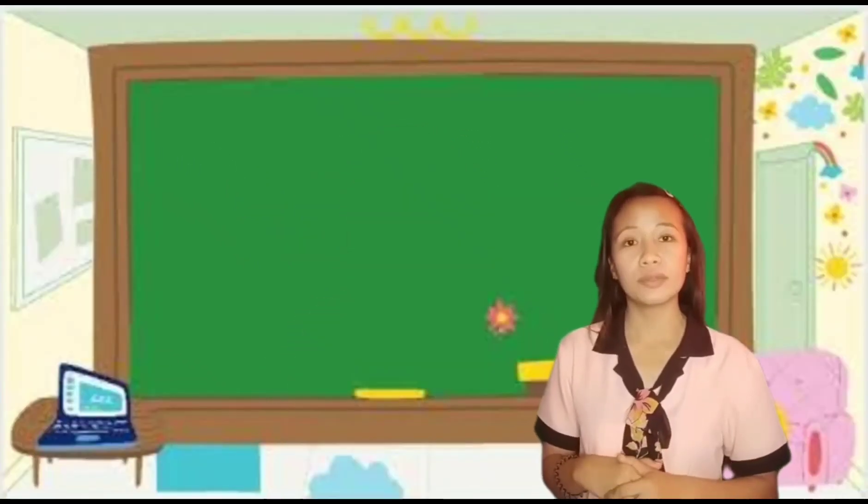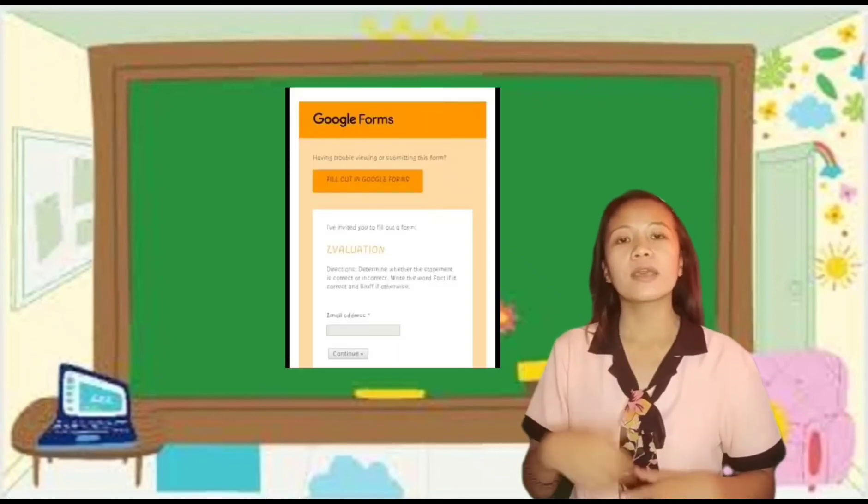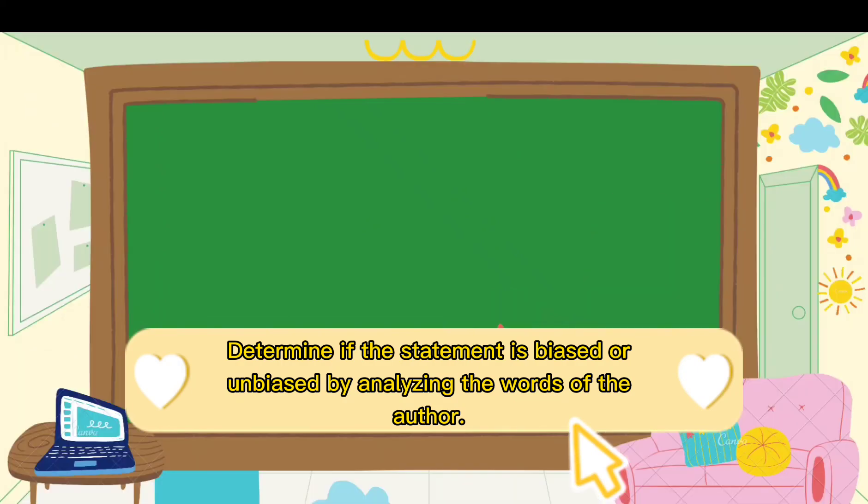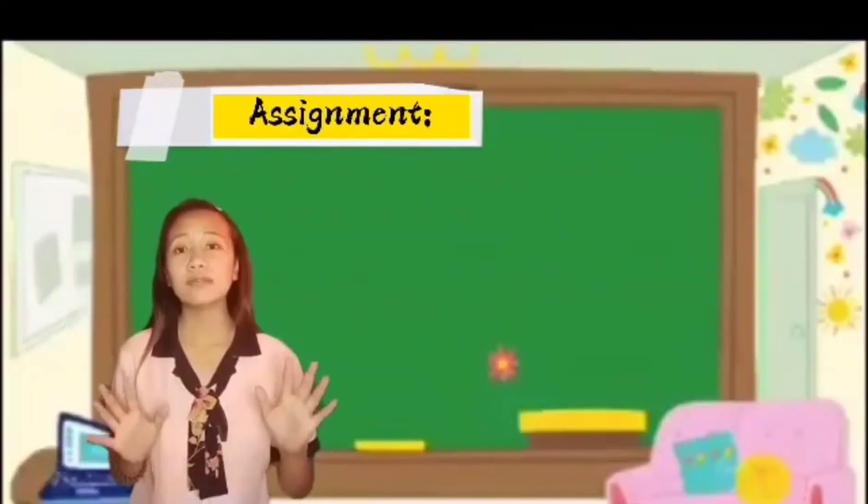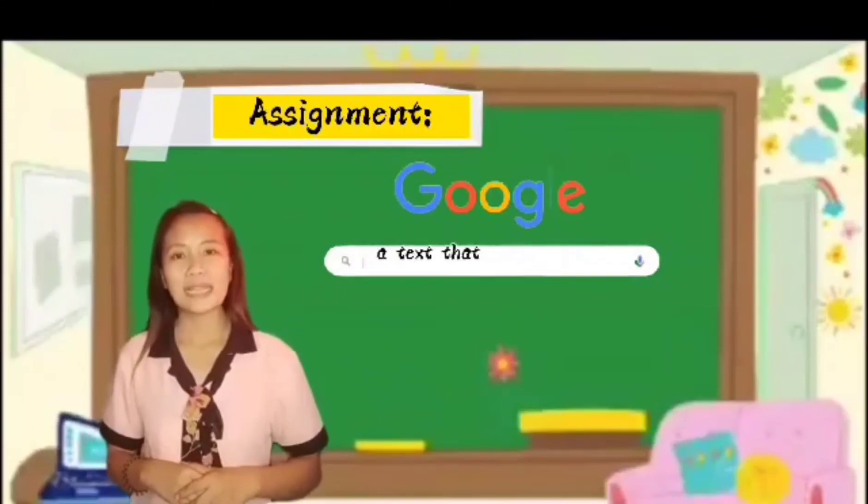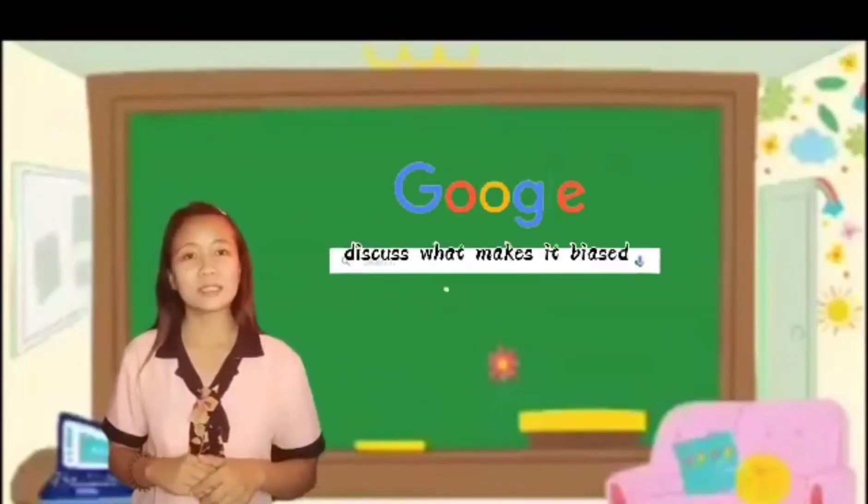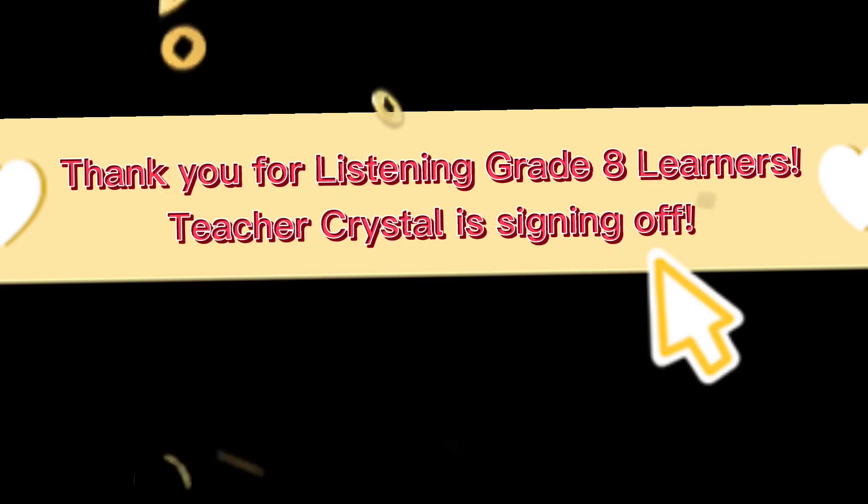And for your quiz class, you will be answering this again through Google Forms just like the last time. So this is the instructions. And for your assignment, you have to search for one text that shows bias and discuss what makes it biased. And you have to submit that on the next day of retrieval. Take care.